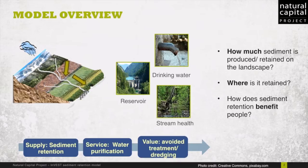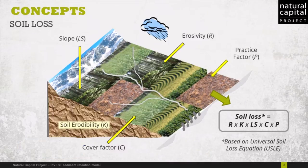Going backwards, the service of interest is water purification, and the service is supplied by natural vegetation. Depending on their location with regard to the stream or main sources of sediment, the natural vegetation is going to retain more sediment. The approach taken in the model has two components. First, the model computes soil loss based on the Universal Soil Loss Equation, or USLE.